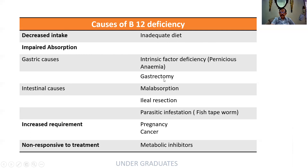Surgical complication — gastrectomy — will obviously lead to decreased production of intrinsic factor. In the intestine, any cause for malabsorption: there is no selective malabsorption but most elements are not absorbed and B12 can be one of them. Ileal resection, just as gastrectomy, will likely result in loss of receptors on the absorbing surface. Parasitic infestation — fish tapeworm or Diphyllobothrium latum. Increased requirement or demand as in pregnancy or malignancy. After all this, patients can be non-responsive to treatment due to metabolic inhibitors.